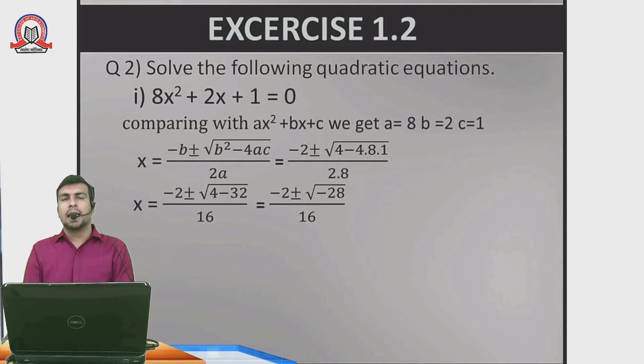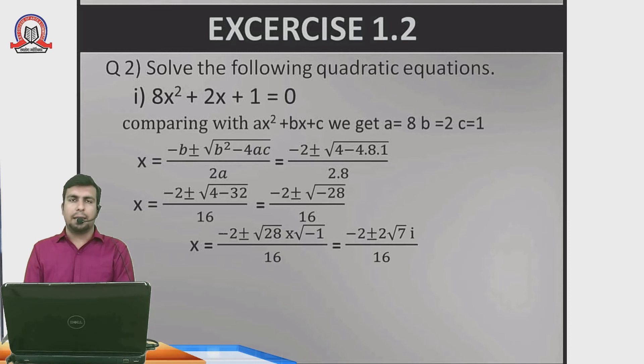Whenever you have a negative inside the square root, the number becomes a complex number. We separate the minus: minus 2 plus or minus root of 28 times root of minus 1 upon 16. Root of minus 1 is called i. 28 can be written as 4 times 7, so root 28 is 2 root 7. Taking 2 common from numerator: x equals (minus 1 plus or minus root 7 i) upon 8. This is your final answer.